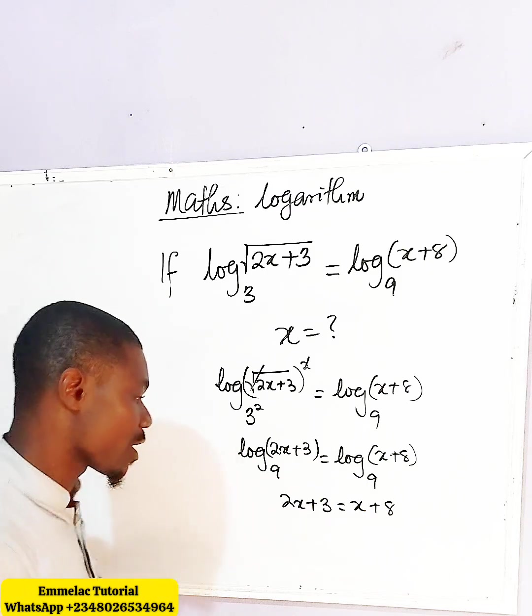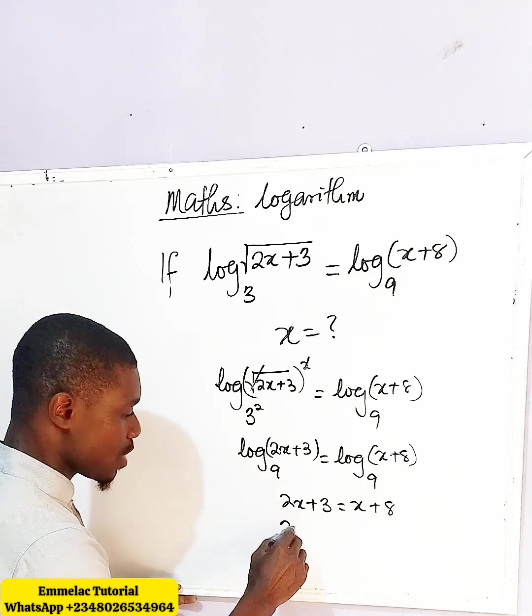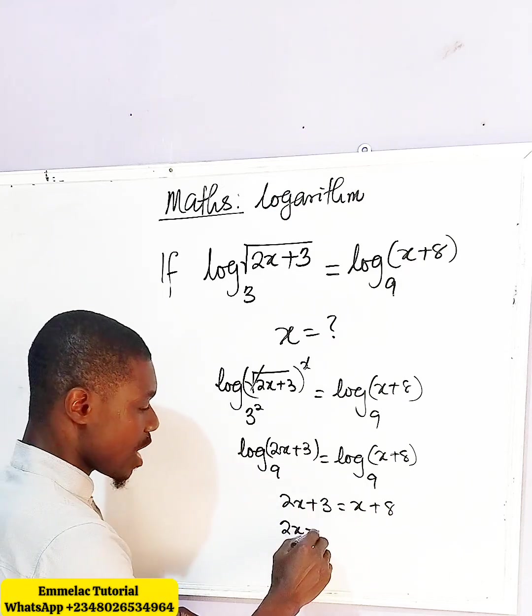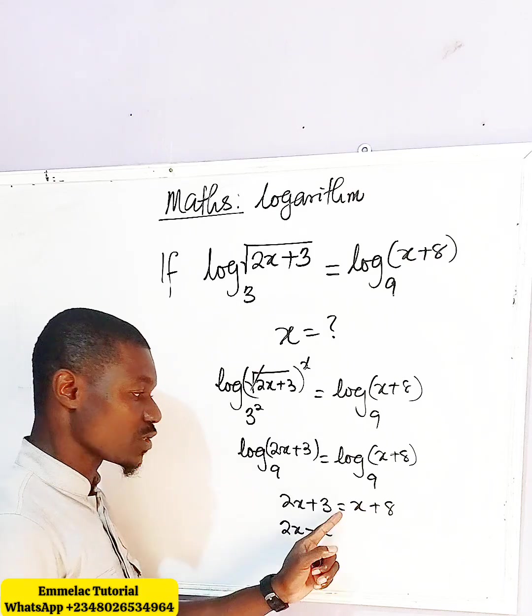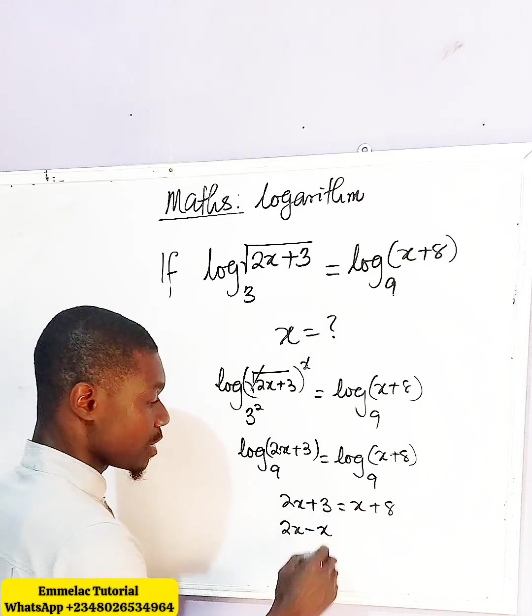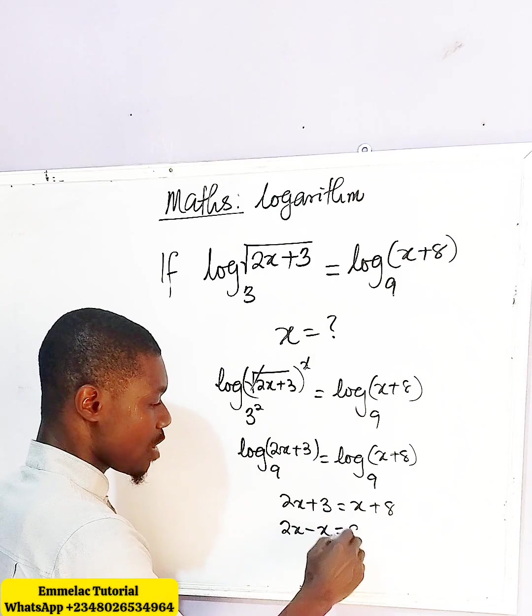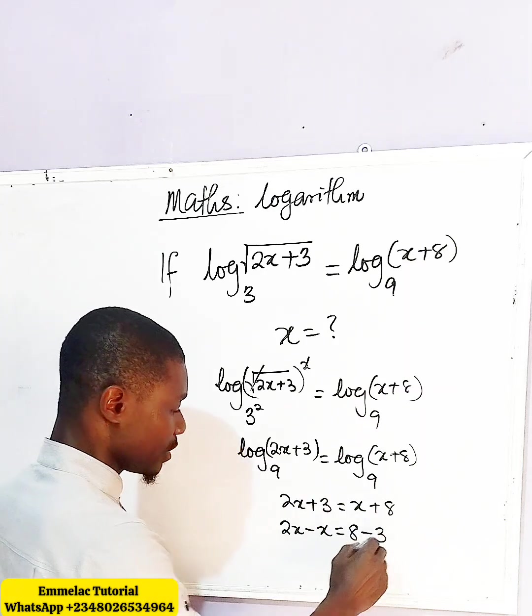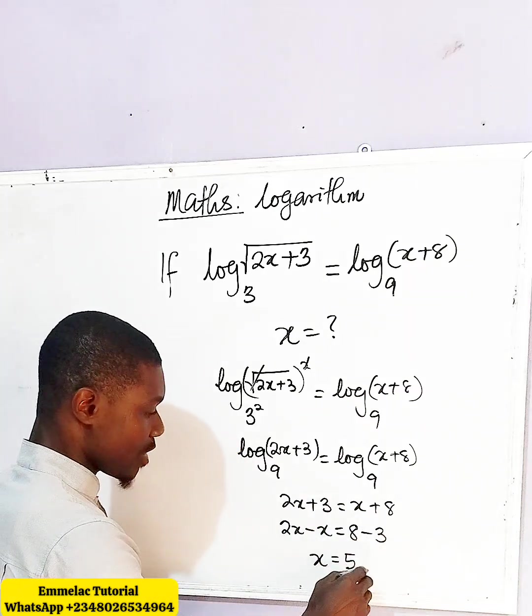Let us collect like terms. 2x minus x, and 3 crossing over gives us 8 minus 3. So we have x equals 5.